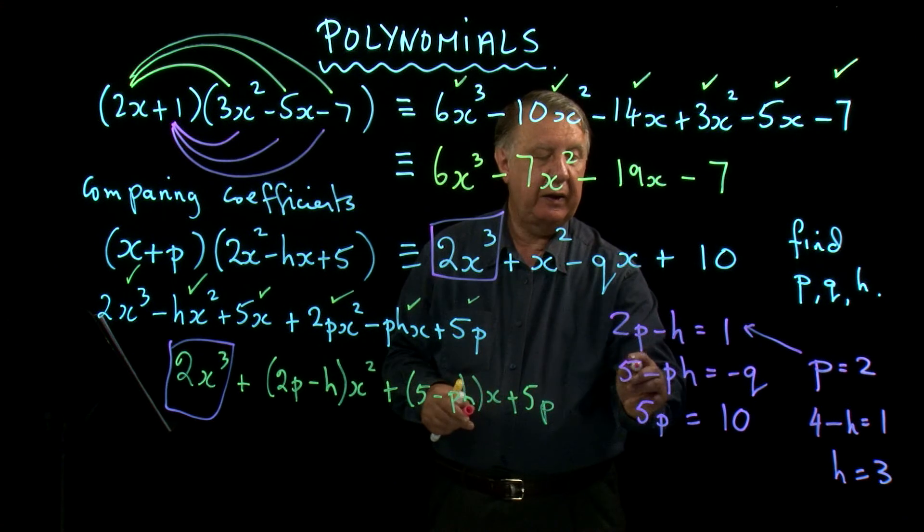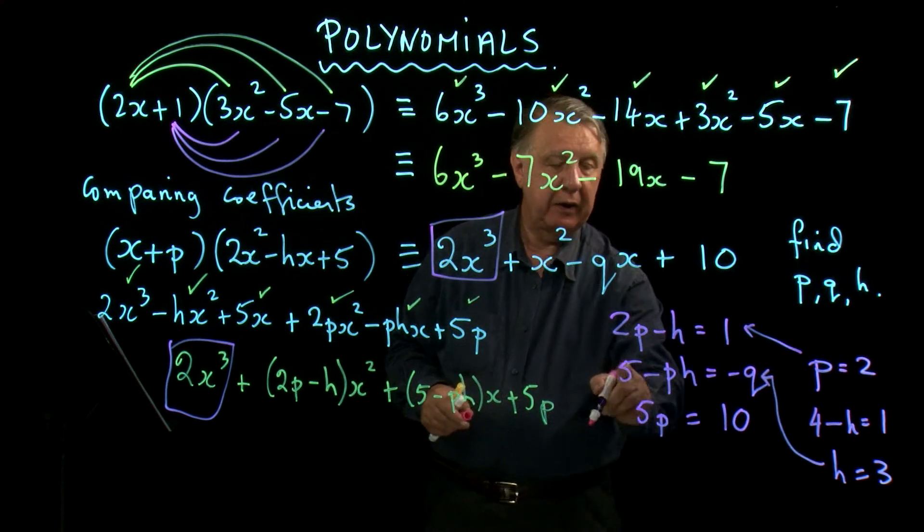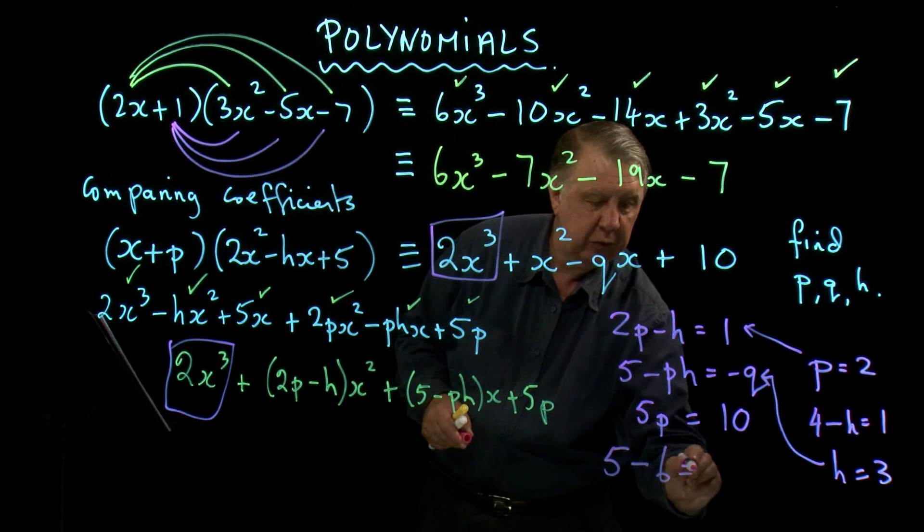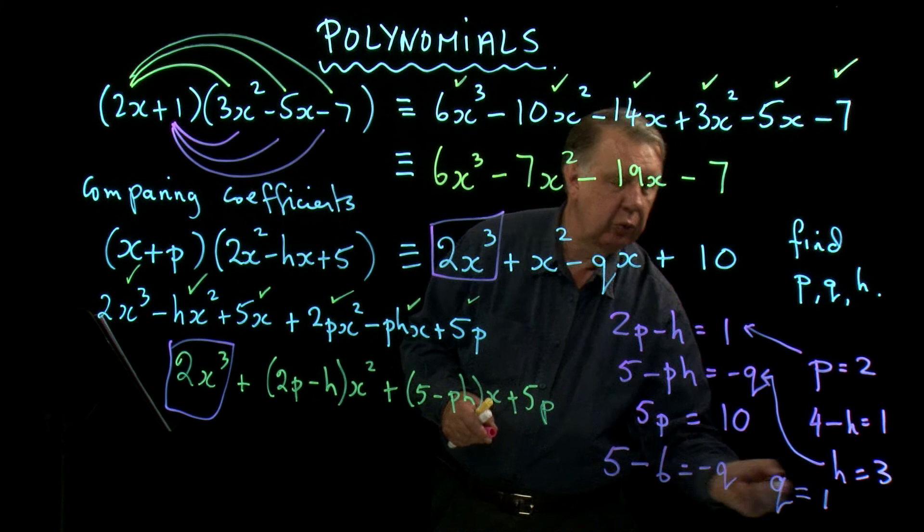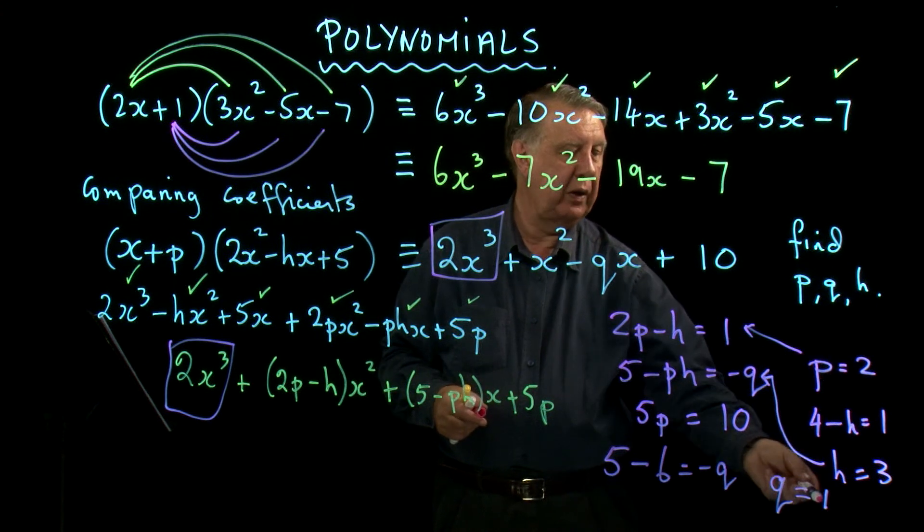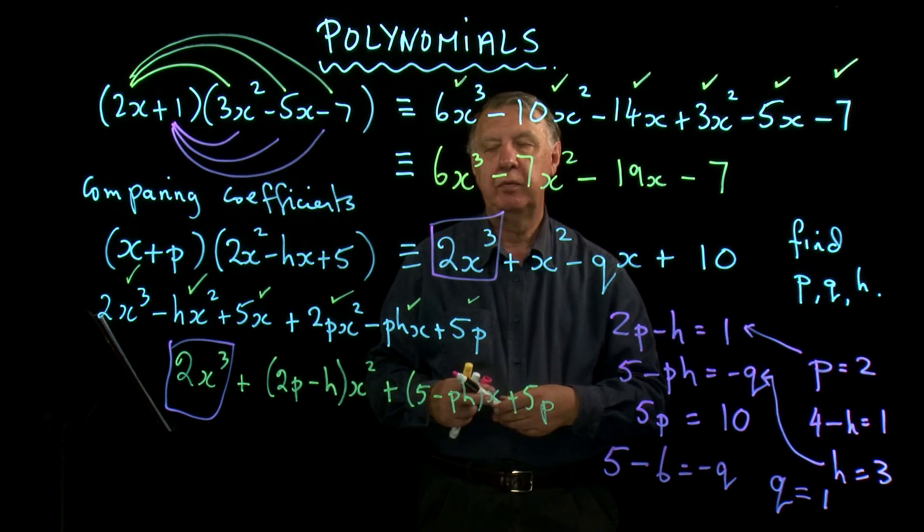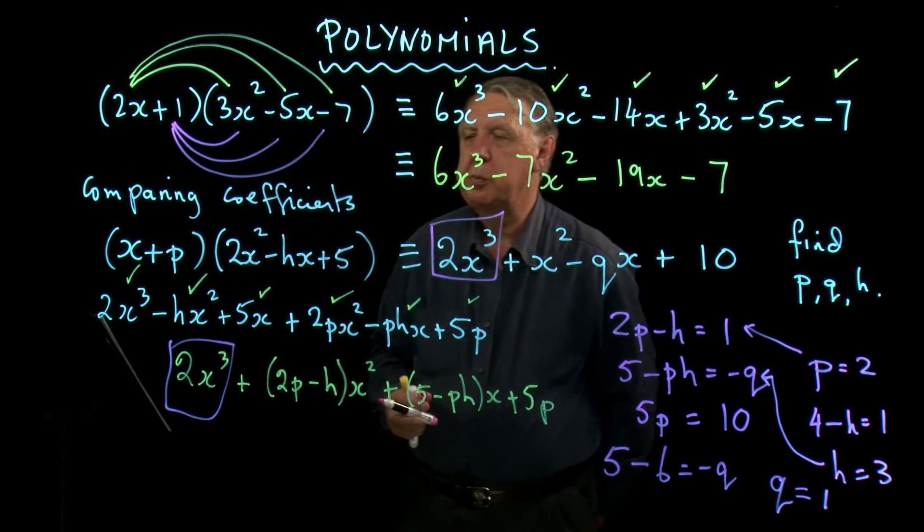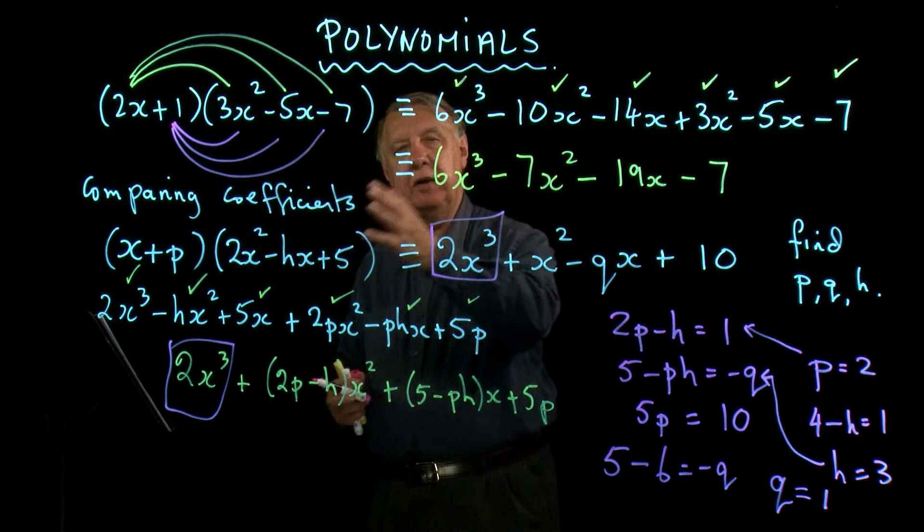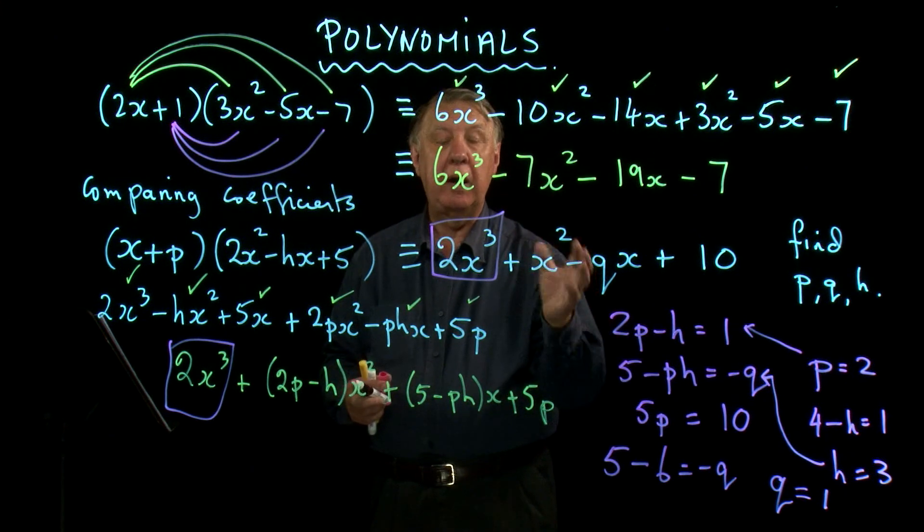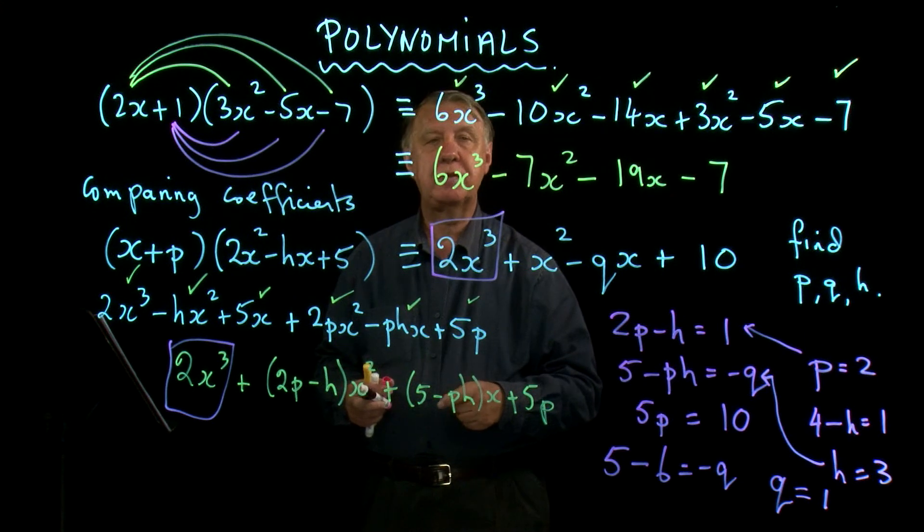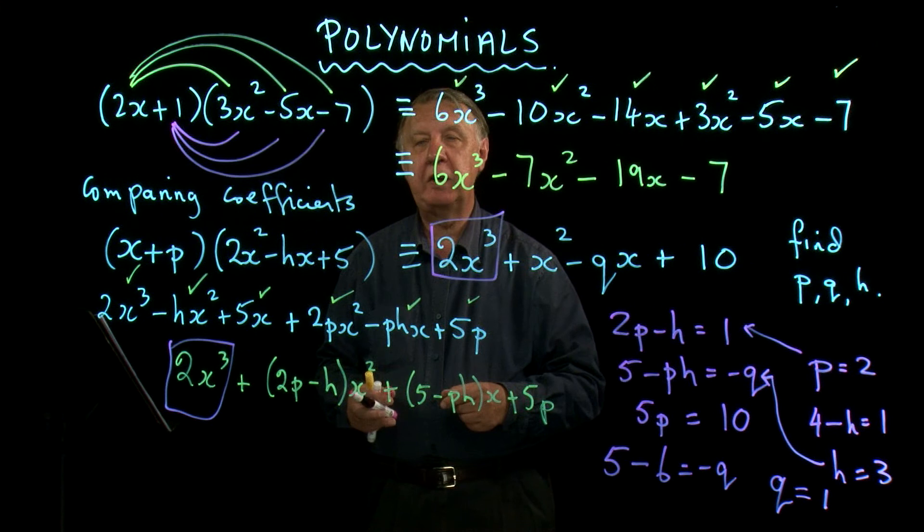And then I can go to here and I get 5 - ph which is 6 equals -q, so q is also equal to 1. So p, q and h are 2, 1 and 3. And that in essence is the nature of this comparing coefficients method. You have to identify things that on each side are the same. It's all to do with the coefficients, the numbers in front of the powers of x, and it's a fairly powerful method.